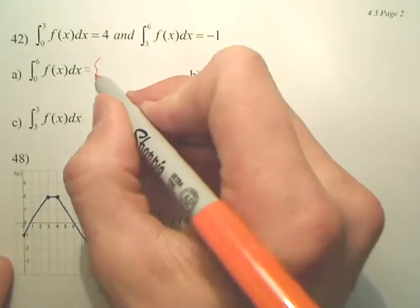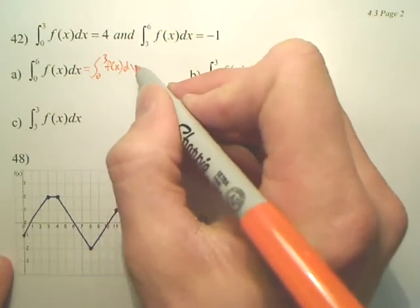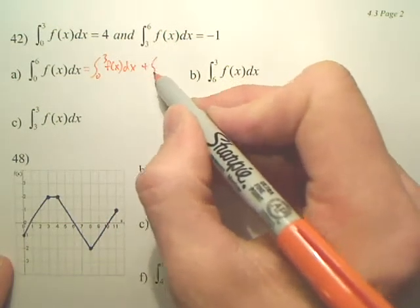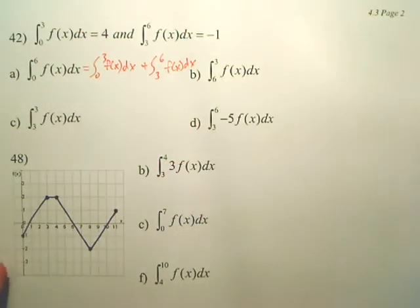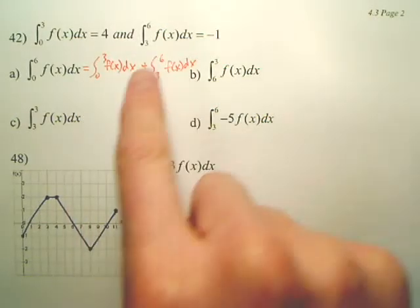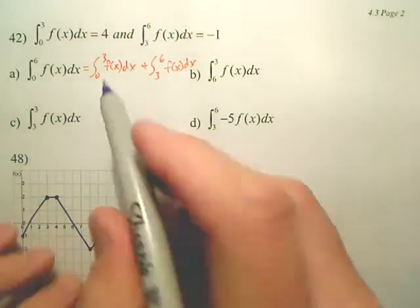Wouldn't that equal the integral from 0 to 3 plus the integral from 3 to 6? And don't we know those answers? Isn't this from 0 to 3, and 3 to 6 is from 0 to 6? So my answer is simply, well, what's this?